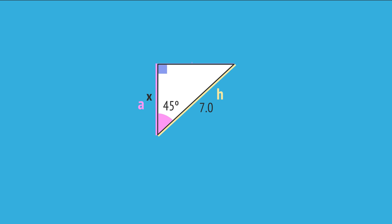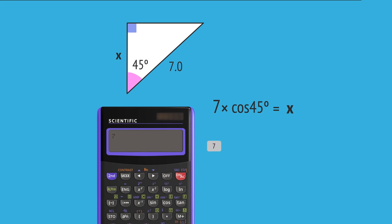The opposite side isn't relevant to this problem, leaving us with the adjacent and hypotenuse, so we use the cosine ratio. Substituting the values into the formula, we write cosine 45 equals X divided by 7. Multiply cosine 45 by 7 to get X on its own, and enter this into a calculator,